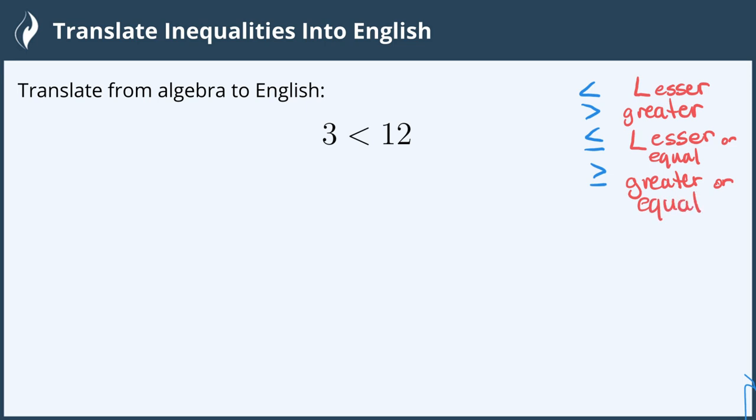Our inequality on the left has an inequality sign opening in the same direction as the letter L. So this is the phrase 3 less than, because it's going in the direction of an L, and the number 12.